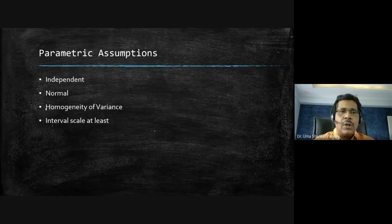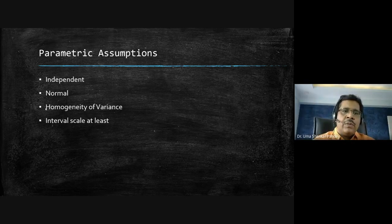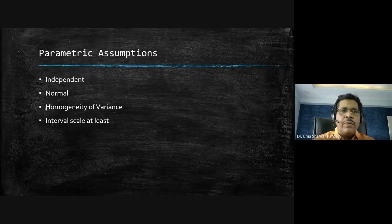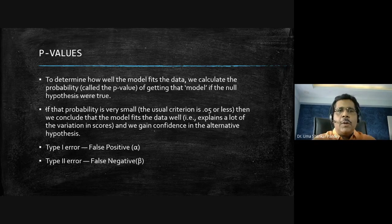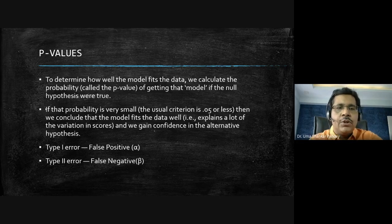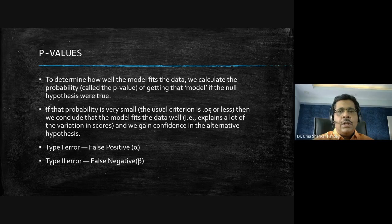If these assumptions are not satisfied — for example, if we have a nominal or ordinal scale — we use non-parametric tests. Even in non-parametric tests, the p-value is crucial. The p-value is the probability of the null hypothesis being true, confirming whether the null hypothesis should be accepted or rejected.